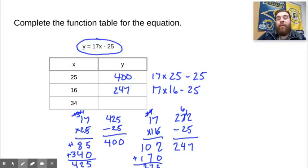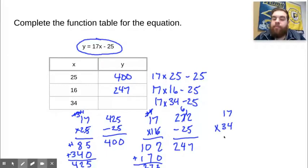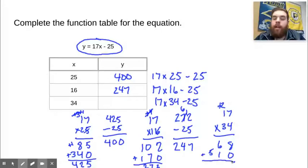Let's go ahead and solve for where x is 34. Go ahead and solve the problem and come back whenever you're finished. Welcome back. Plugging in 34: it would be 17 times 34 minus 25. 17 times 34: 4 times 7 is 28, carry the 2. 4 times 1 is 4, plus 2 is 6 — that's 68. Bring down the 0. 3 times 7 is 21, carry the 2. 3 times 1 is 3, plus 2 is 5. Add them up: 8 plus 0 is 8, 6 plus 1 is 7, 5 plus nothing is 5. So we have 578.